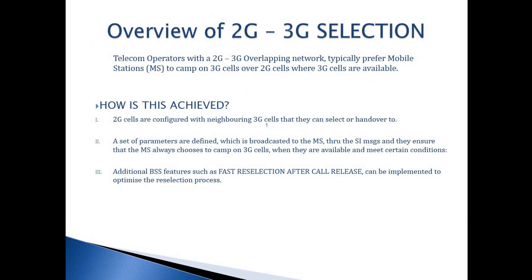Let's look at why we need 2G to 3G reselection. Telecom operators these days have provided GSM and UMTS radio access network services. The 2G network is preferred for voice calls and the 3G network is preferred for data services. So we must have a system that helps a mobile station to decide which to camp on. Typically, mobile operators set their network to prefer the 3G network, and mobile stations will prefer to camp on the 3G network wherever it is available.